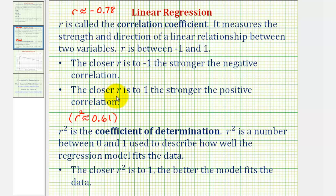And the closer r is to positive 1, the stronger the positive correlation, which would mean if x increases, then so does y. So our value was approximately negative 0.78. So we have a negative correlation, but notice how it's not extremely strong because it's approximately negative 0.78.